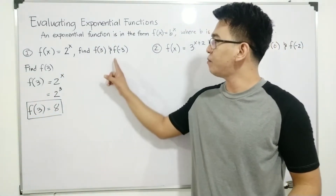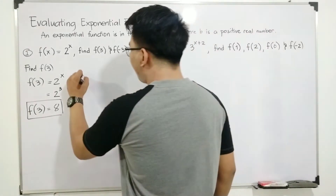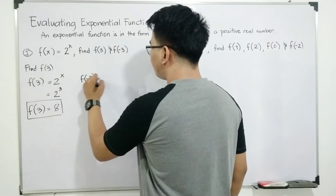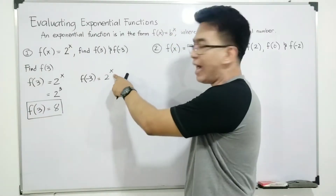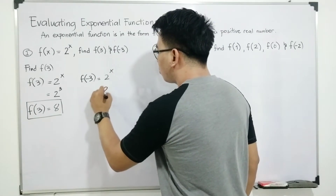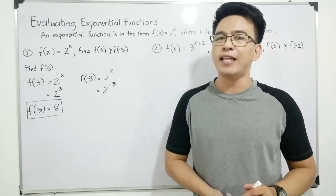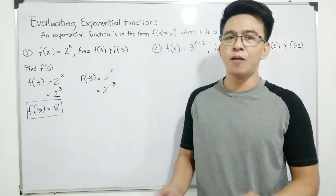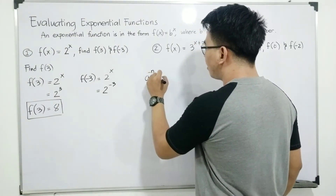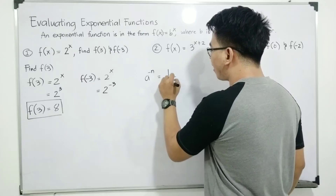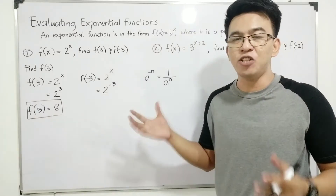Now let's move on with the second one. We are asked to find f of negative 3. Copying this function, 2 raised to x, we can replace x by negative 3, so it will become 2 raised to negative 3. By the way, if your exponent is negative, you need to make it a positive one. So we have the rule: a raised to negative n is equal to 1 over a raised to n. We can make this exponent become positive by moving it to the denominator.